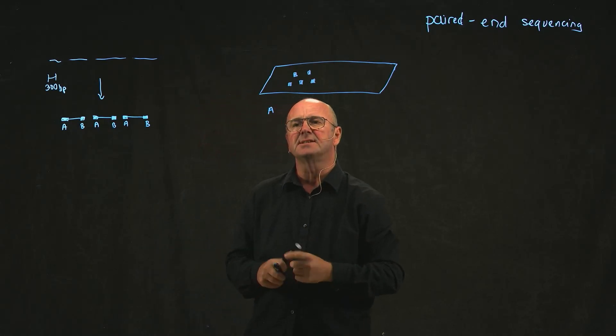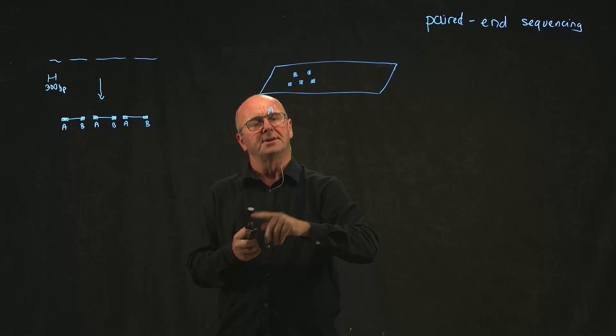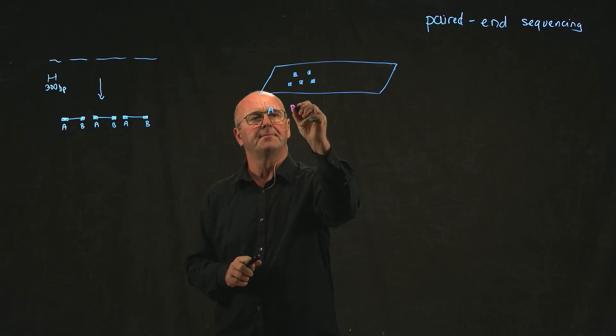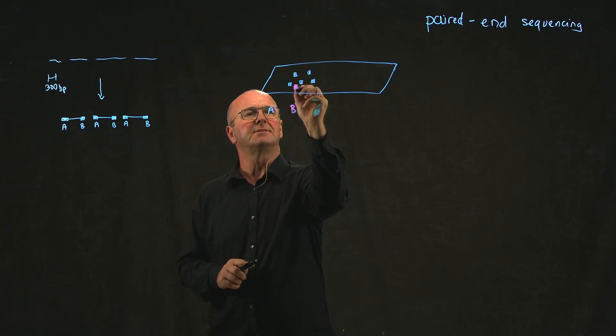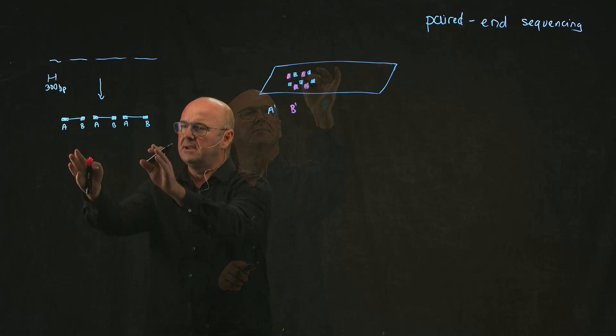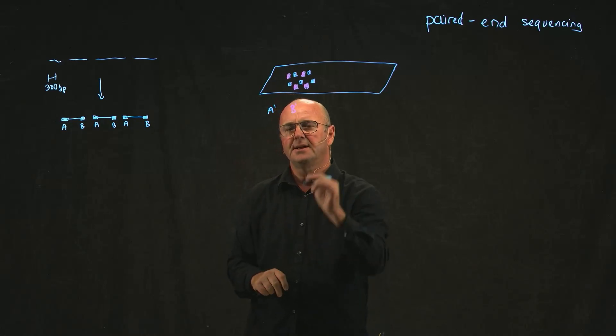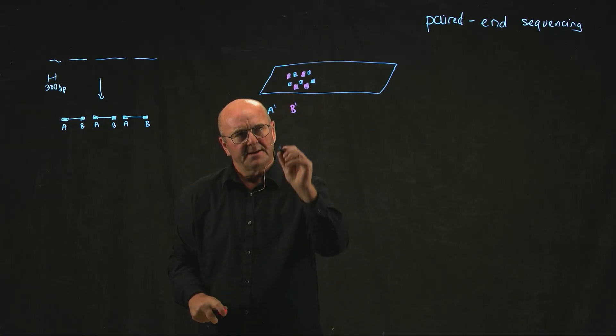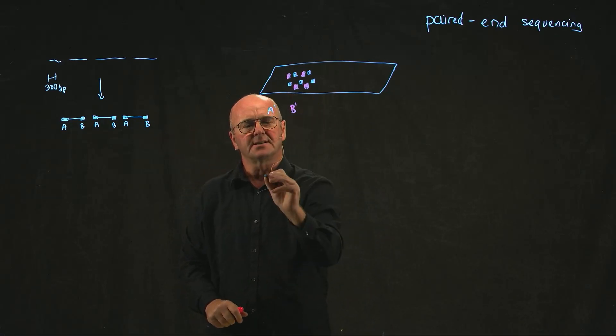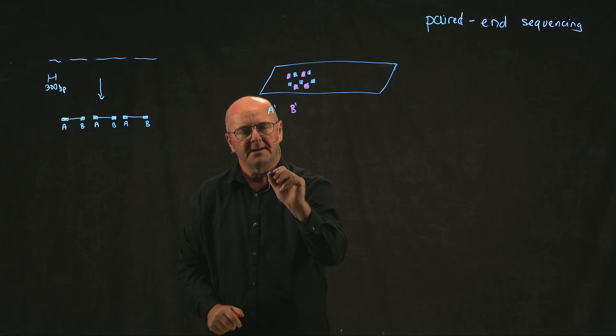And on that slide we have sequences that are complementary to A and they've been fixed to the glass slide. We also have sequences that are complementary to the B and they're also fixed to the glass slide. We have our solution of DNA where we've labeled them with A and B.